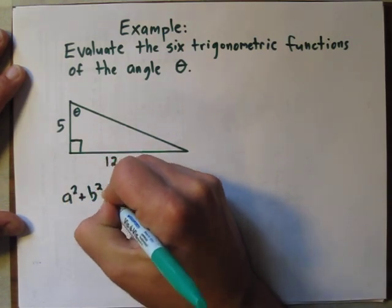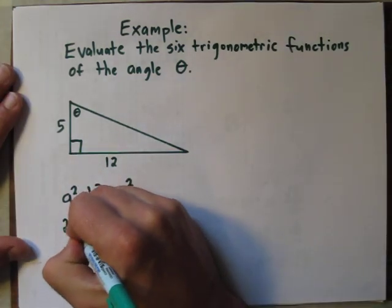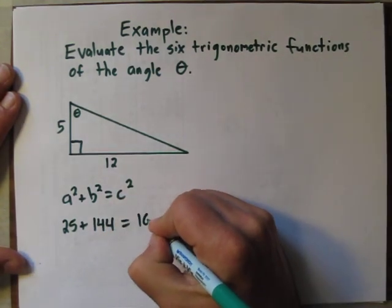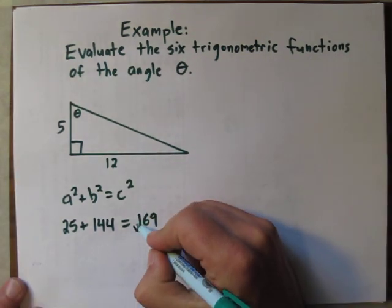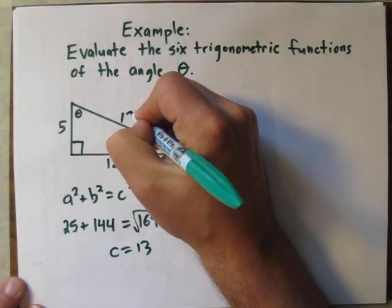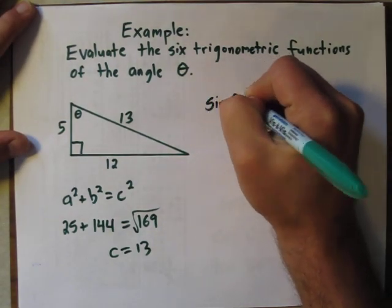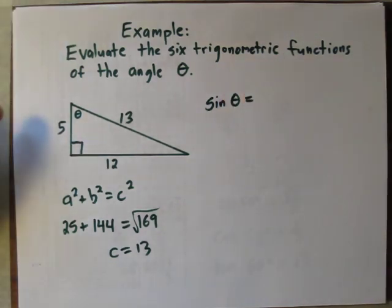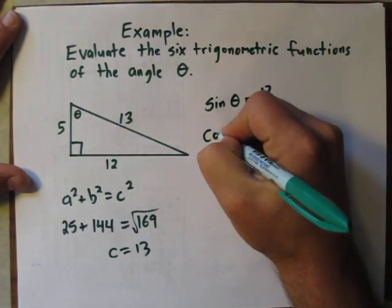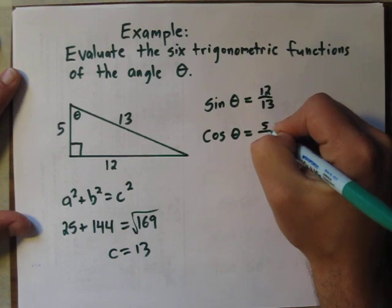Using a² + b² = c², where c is the length of our hypotenuse: 5 squared is 25, 12 squared is 144, and we end up with 169 as the sum. To figure out what c is, we take the square root of 169 and find that the length of c is 13. Now we're ready to evaluate the six trigonometric functions. Sin theta is opposite over hypotenuse, so sin theta is 12 over 13. Cos theta is the adjacent side over the hypotenuse, so we have 5 over 13.